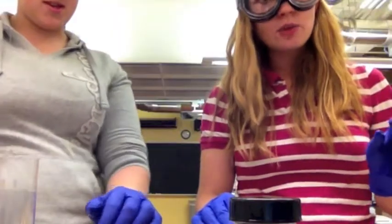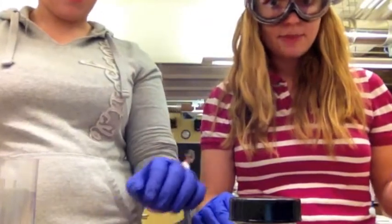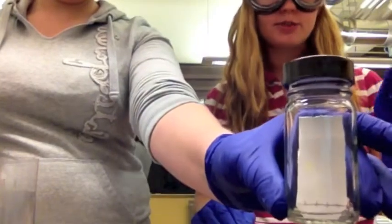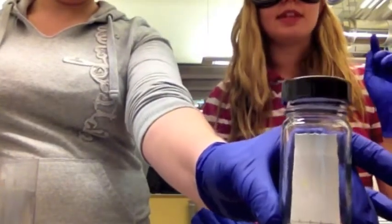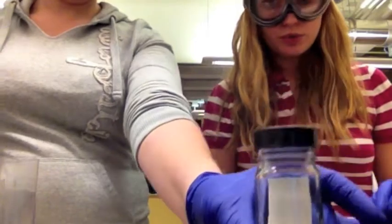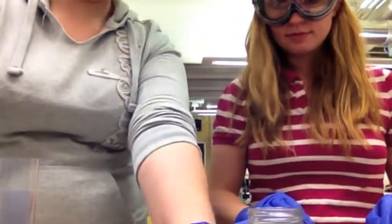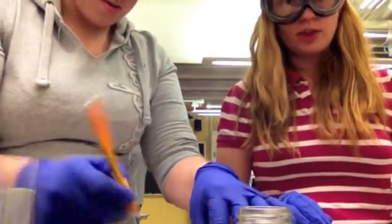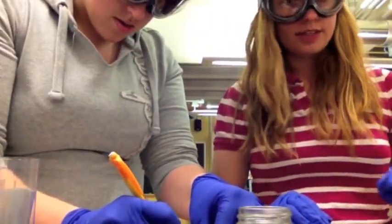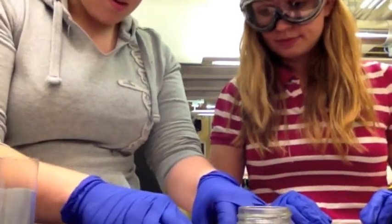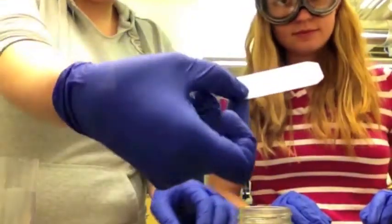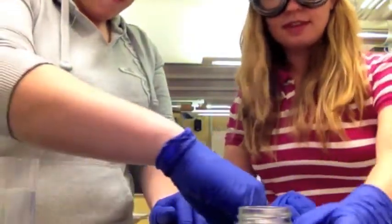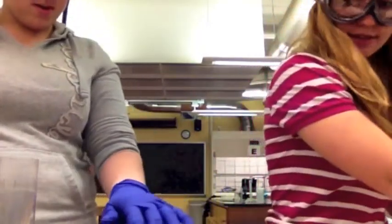After you wait for a while for your plate to develop, after it reaches about three quarters of the way up the plate, then it can be carefully removed. Immediately after removing, draw a pencil line along the top of the solvent. Now we will allow it to dry for just a second.